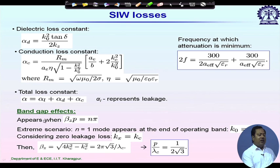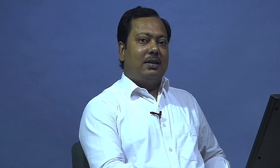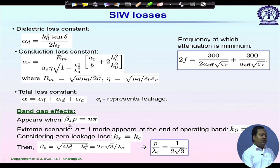One more problem limits high-frequency operation of SIW: Bragg scattering and band gap effects for periodic structures. Since the side walls already use a periodic chain of metallic vias, we face a similar problem. For any periodic structure, the band gap appears when beta_z × p = n × pi, where p is the periodicity and n is any integer.